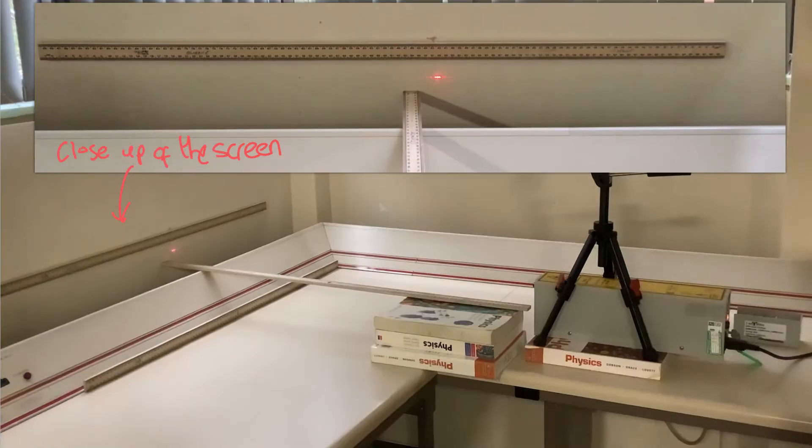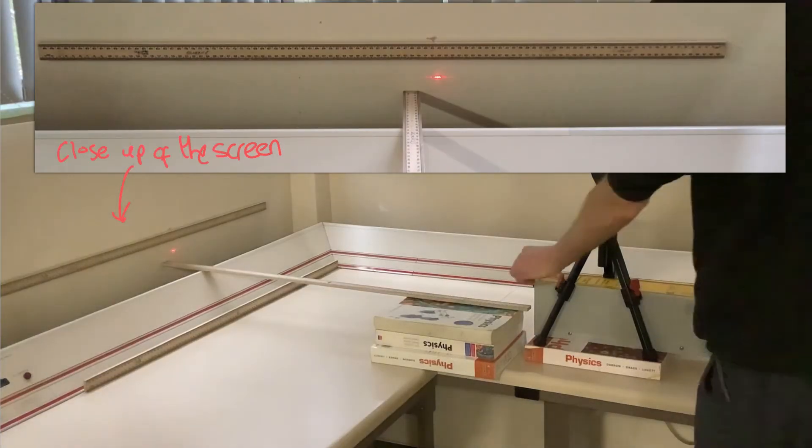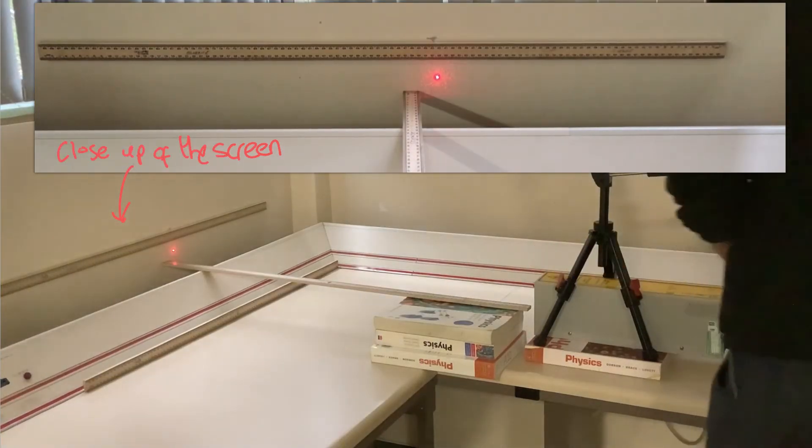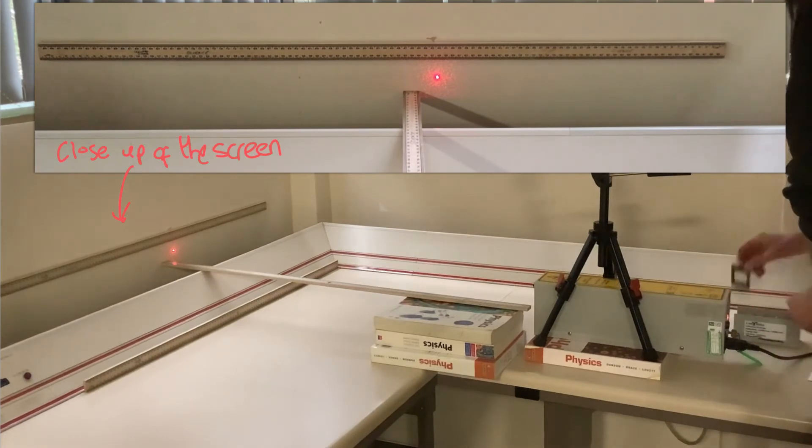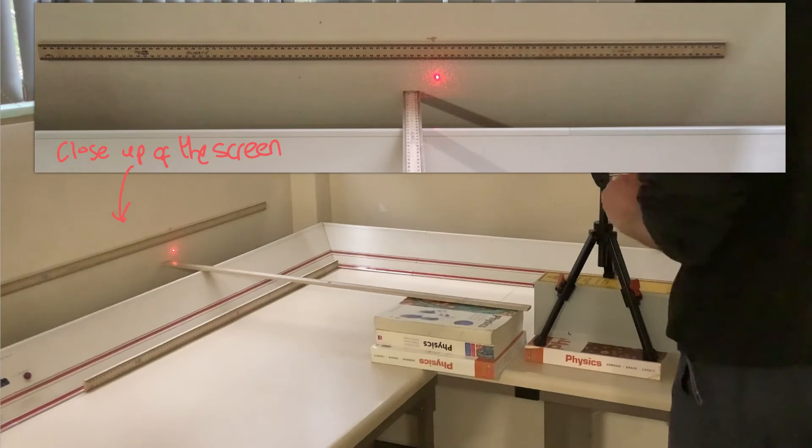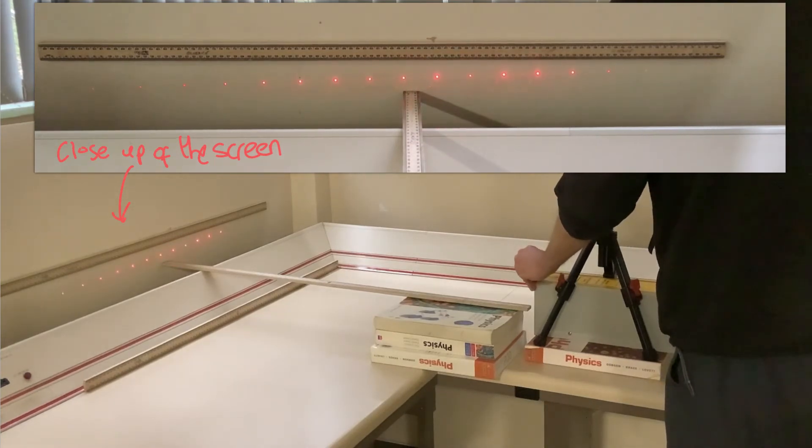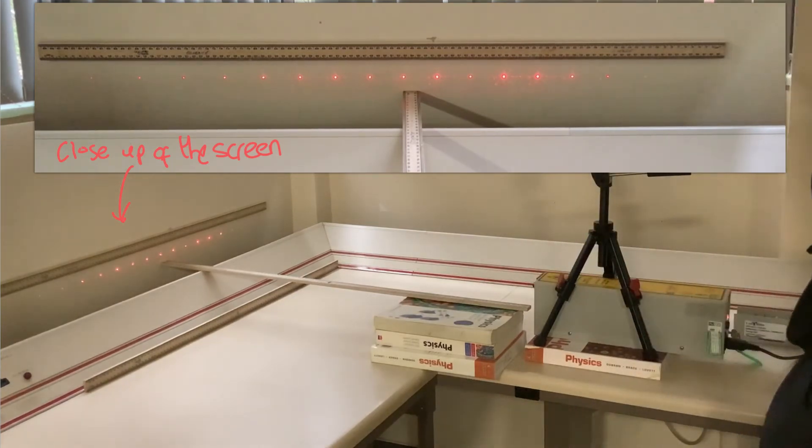Now let's take away our double slit and replace it with a diffraction grating, and the first diffraction grating I'm going to use is 80 lines per millimeter. So there we go with 80 lines per millimeter. And what can you notice about the fringes produced by the diffraction grating in comparison to the double slit?